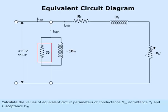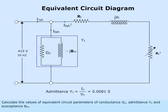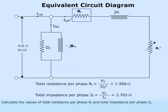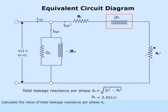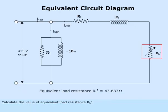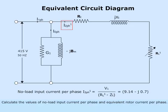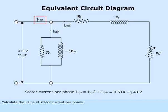Calculate the values of equivalent circuit parameters: conductance G1, admittance Y1, and susceptance BM. Calculate the values of total resistance per phase RT and total impedance per phase ZT. Calculate the total leakage reactance per phase XT and the equivalent load resistance RL1. Then calculate the no-load input current per phase, equivalent rotor current per phase, and stator current per phase.